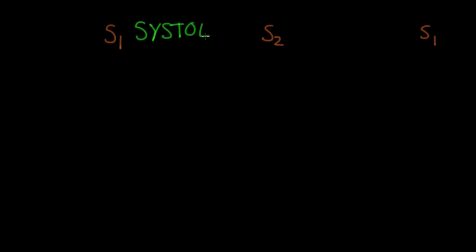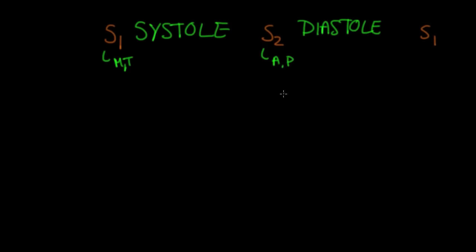So as a quick review, we have S1 and S2. Remember this is a cycle, and so in between S1 and S2 we have systole, and between S2 and S1 we have diastole. S1 and S2 are actually caused by closing of the valves. For S1, specifically the closing of the mitral and the tricuspid, and for S2, specifically the closing of the aortic and pulmonic valves. And these are all abbreviated here.